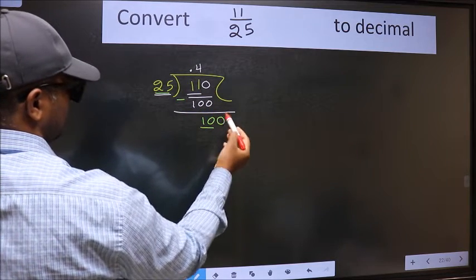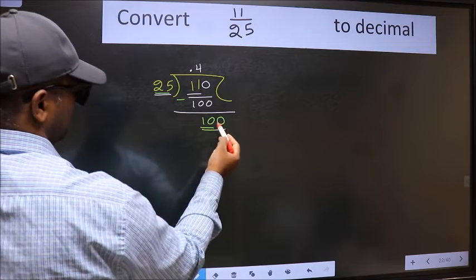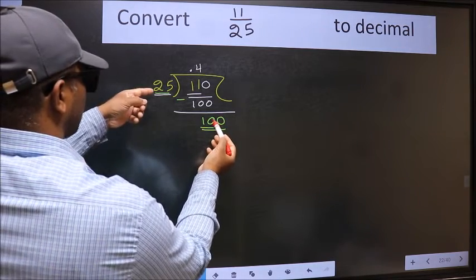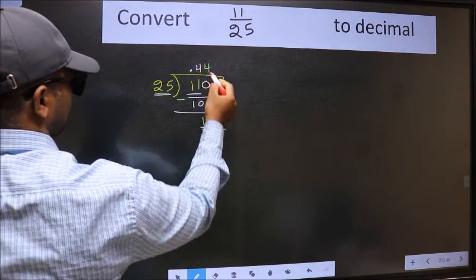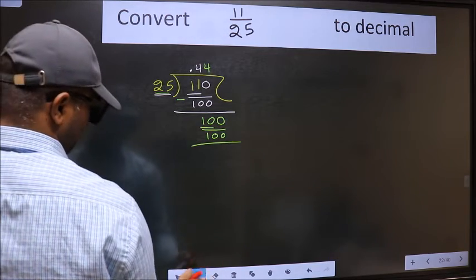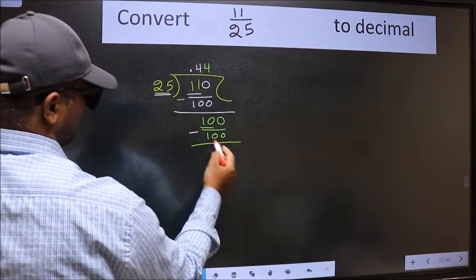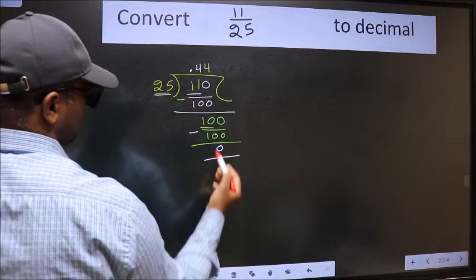So we directly take 0. So, 100. When do we get 100 in the 25 table? 25 times 4 is 100. Now we should subtract. We got 0.